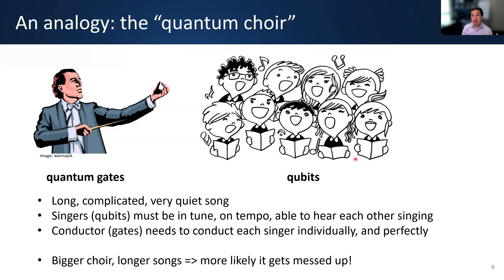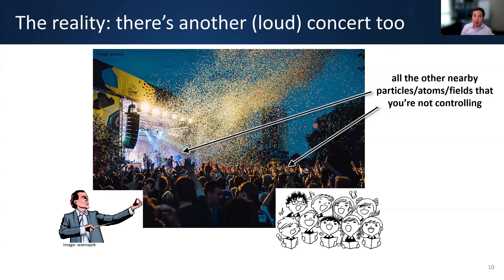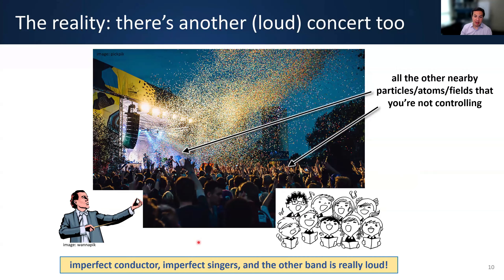The real challenge in the real world is that there's another concert going on — a very loud one. You're trying to sing this very quiet song with your qubits, and there's a big rock concert in the background: all of the other particles, atoms, and fields out there that you're not controlling. These are drowning out your qubits or giving them false information. The challenge of quantum computing hardware is that our conductor — the gates — is imperfect, our singers are imperfect, and there's this other loud band playing while we're trying to sing our quiet quantum song. The goal is to make a long, quiet, beautiful quantum song despite all of this.